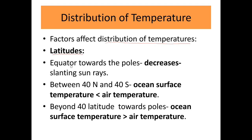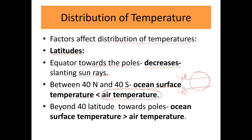Factors affecting distribution of temperature: the first is latitude. From the equator towards the poles, temperature decreases because of slanting sun rays. Between 40 degrees north and 40 degrees south, ocean surface temperature is less than the air temperature. In the tropic and subtropic region, insolation received is more and when heat is more, heat loss is also more, so much heat is lost to the atmosphere, making air temperature higher in this region.